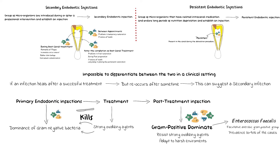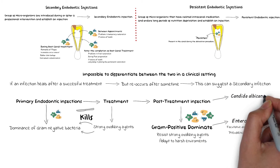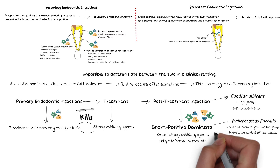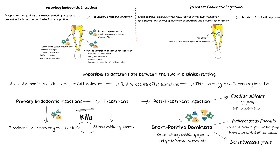However, the pathogenicity of E. faecalis in causing post-treatment infections has been questioned, as it has also been detected in canals with no post-treatment infection at similar prevalence. Other than E. faecalis, Candida albicans is also present in secondary infections; its concentration in primary infections is very low, but in root canal treated teeth it can range from 3 to 8%. The Streptococcus group has also been frequently detected and shown to be involved in secondary and persistent infections.